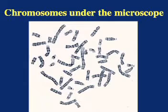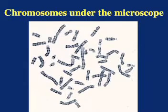But this tangled mess is hard to analyze. The next step in the analysis is to use a computer program that lines up the chromosome pairs by number, with number one being the largest.